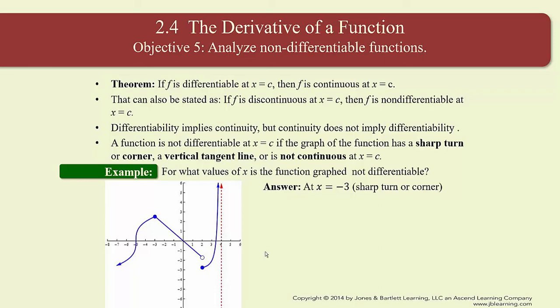When looking for where a function is not differentiable, look for a vertical tangent line — such as x equals negative 5 — a sharp turn like x equals negative 3, or where it's not continuous, like x equals 2 or x equals 4 for this function. That concludes this section on the derivative. Head off now and do the exercises in section 2.4.